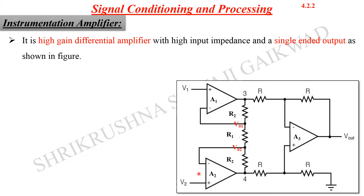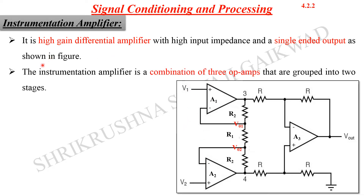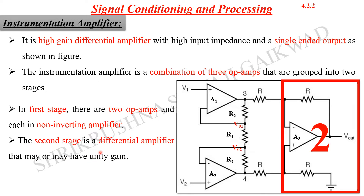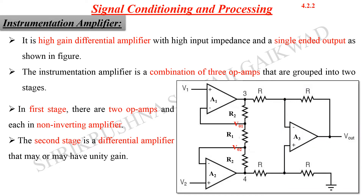The instrumentation amplifier has a facility of two input signals provided at the input stages. It is actually a combination of three operational amplifiers, represented as A1, A2, and A3, grouped into two stages. In the first stage there are two operational amplifiers, each connected in the non-inverting mode, so the input is provided to the non-inverting terminal. In the second stage there is a differential amplifier that may have unity gain, acting as a buffer or voltage follower. The inputs are provided to both inputs of this operational amplifier.